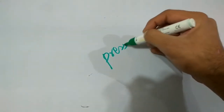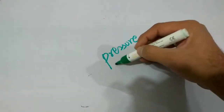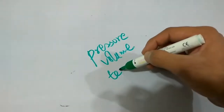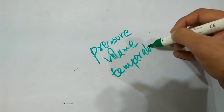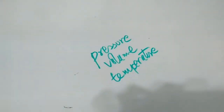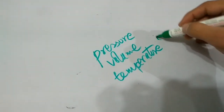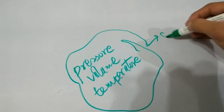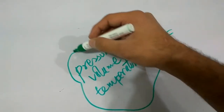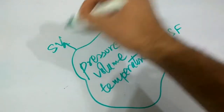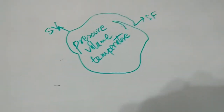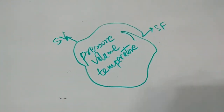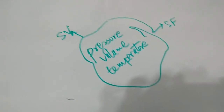Pressure, Volume, Temperature — these three are state functions and state variables both. They belong to both these categories, and now we are going to see how they belong to both of these categories.